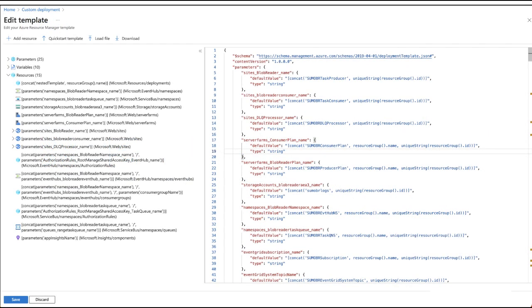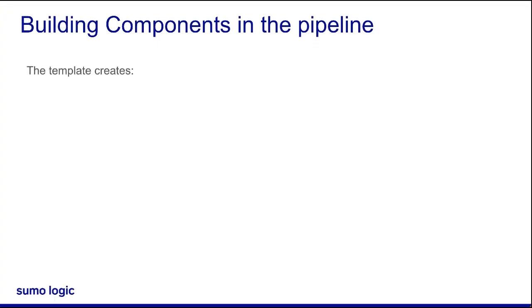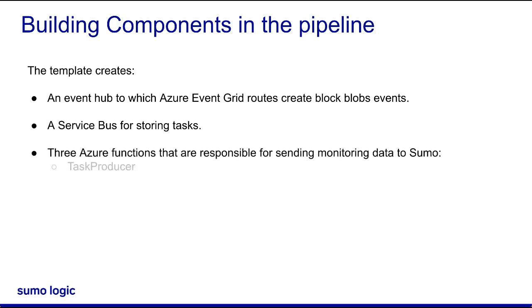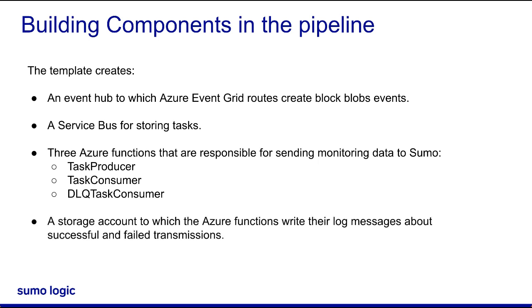Sumo Logic provides an ARM template to build most of the components in the Azure-to-Sumo pipeline. The template will create an event hub to which Azure Event Grid routes create block blob events, a service bus for storing tasks, three Azure functions — Task Producer, Task Consumer, and DLQ Task Consumer — that are responsible for sending monitoring data to Sumo, and a storage account to which the Azure functions write their log messages about successful and failed transmissions.